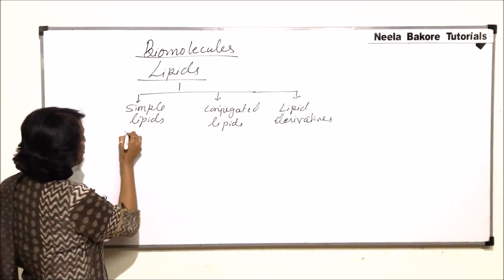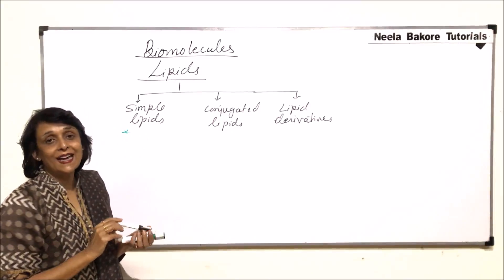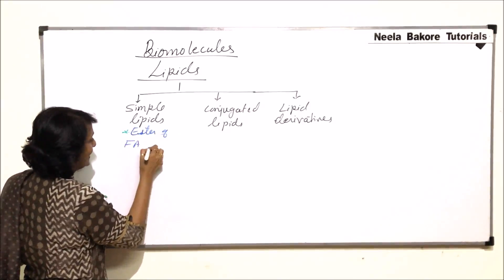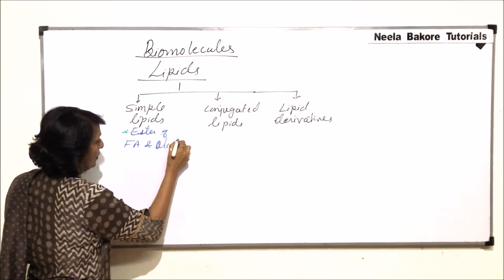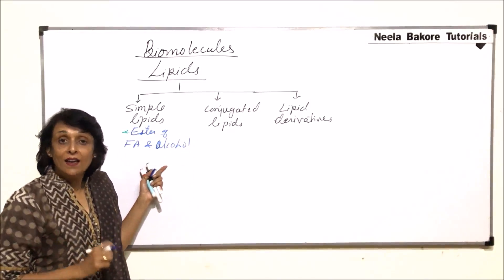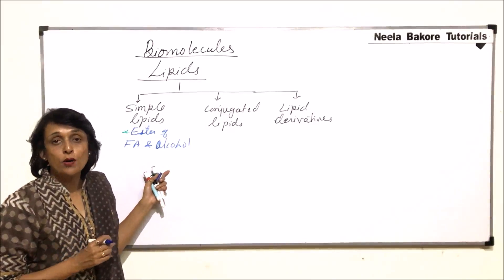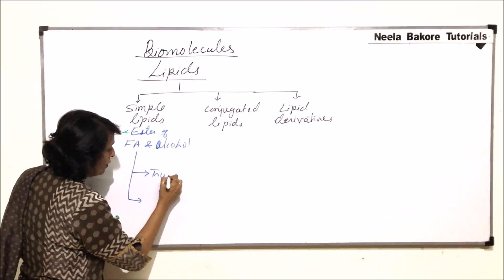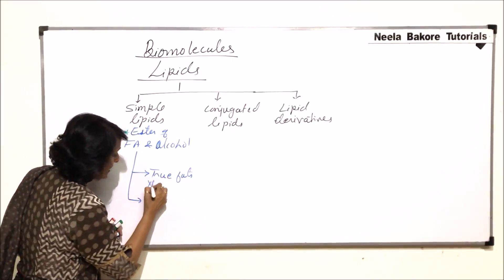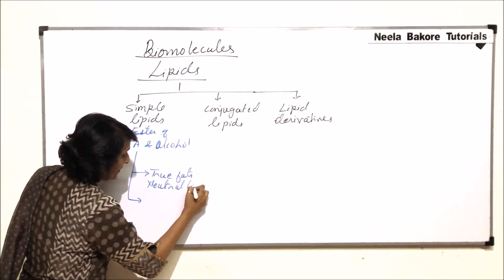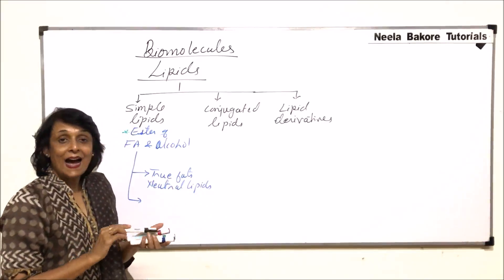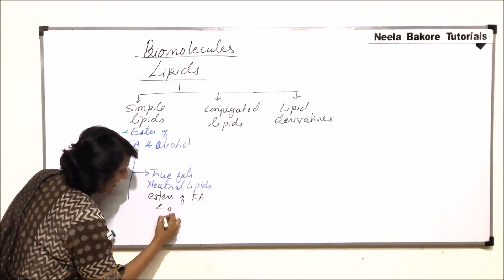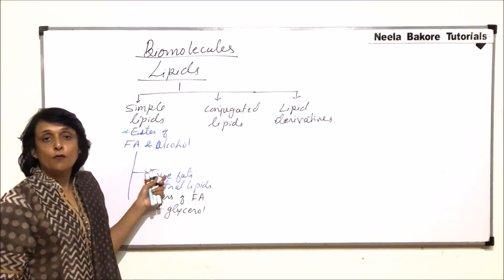When we talk of simple lipids, they are actually esters of fatty acid and alcohol. If this alcohol is glycerol, then we will call them true fats or neutral lipids. Simple lipids are further divided into two categories: true fats, also known as neutral lipids. Neutral lipids are esters of fatty acid and glycerol.